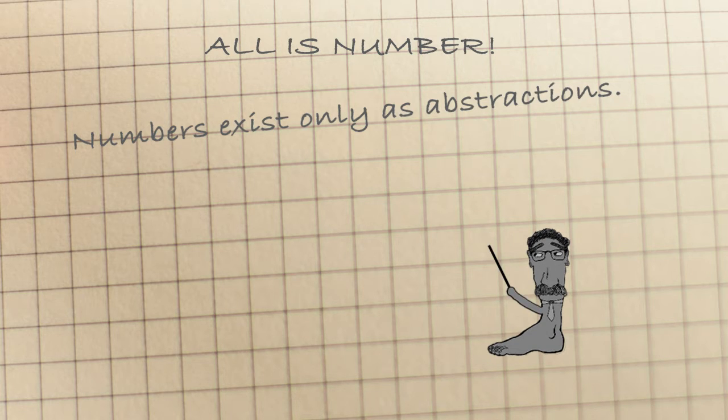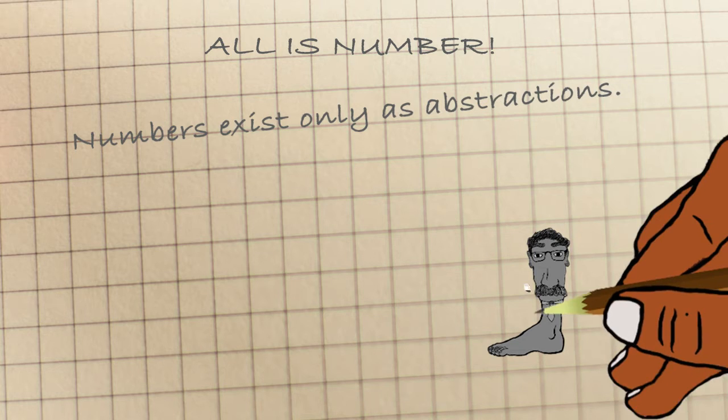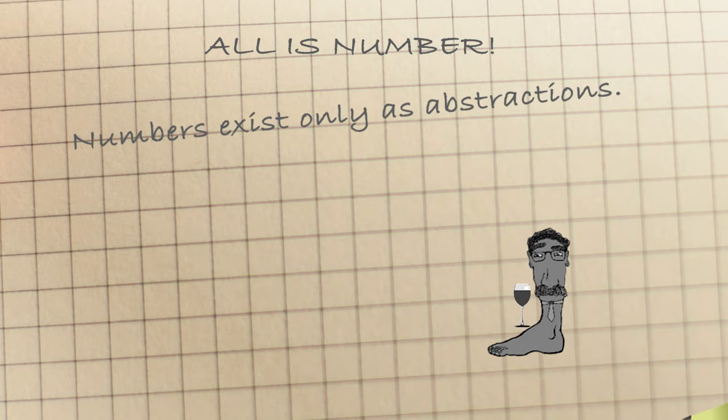Instead, they immediately start with abstractions. But this is where we would be wrong. Although numbers for us exist only in the abstract, the Pythagoreans still didn't make a sharp distinction between material and immaterial.